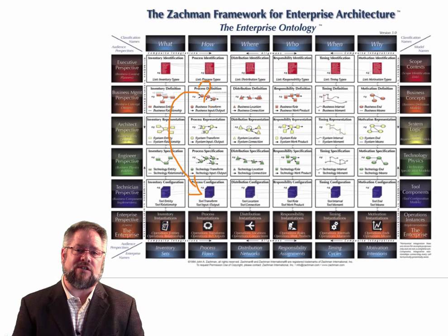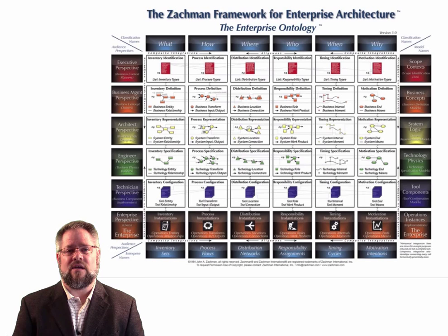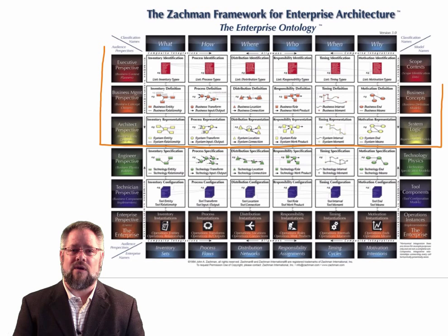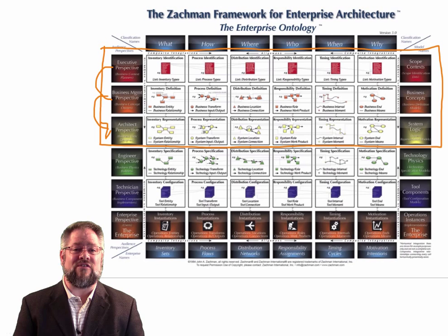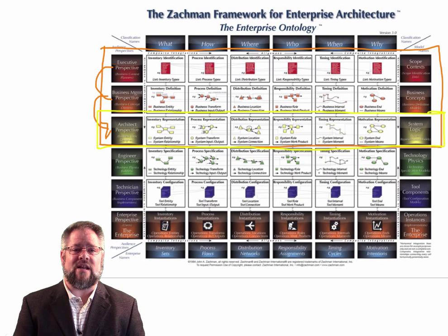So what about project coordination? Let's say we have two particular groups of people within the enterprise. The first group of people, let's say, have strategic planning responsibility for information systems — we'll say they're concerned with rows one through three. If we follow the concept of reification and transform the scope identification list properly, they should produce a single system logic for the enterprise. Remember, choices about the technology have not been made. We're looking at the flow of data and records in support of the business concepts or requirements developed in row two.